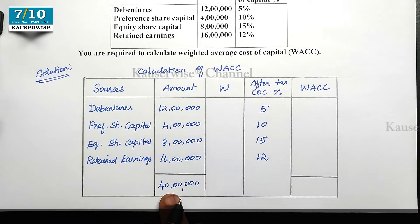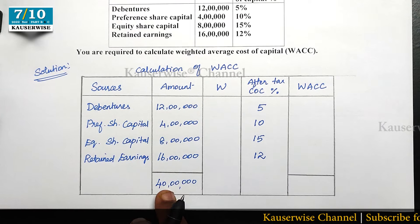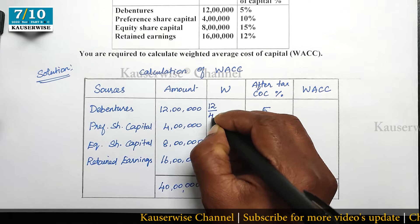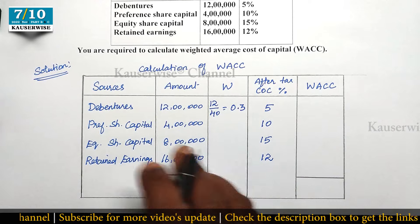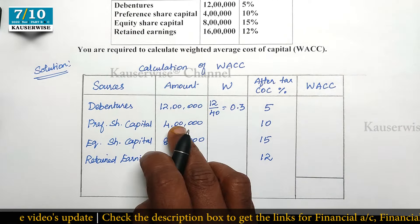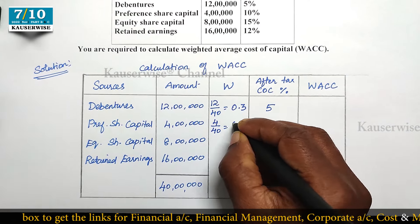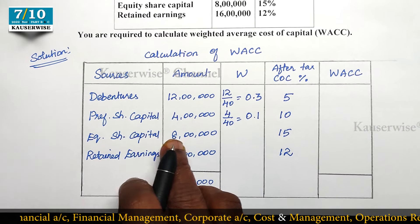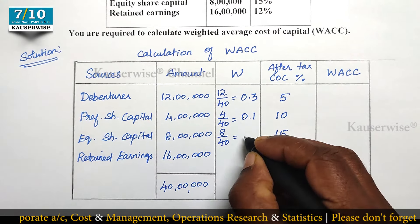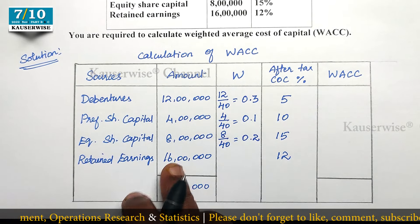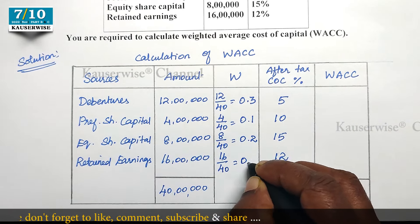To find the weights, first we need to find out the total: 12 + 4 + 8 + 16 = 40 lakhs total. Now we find the weight for the first component: 12 lakhs divided by 40 lakhs = 0.3. Next component: 4 divided by 40 = 0.1. Next: 8 divided by 40 = 0.2. And 16 lakhs divided by 40 lakhs = 0.4.